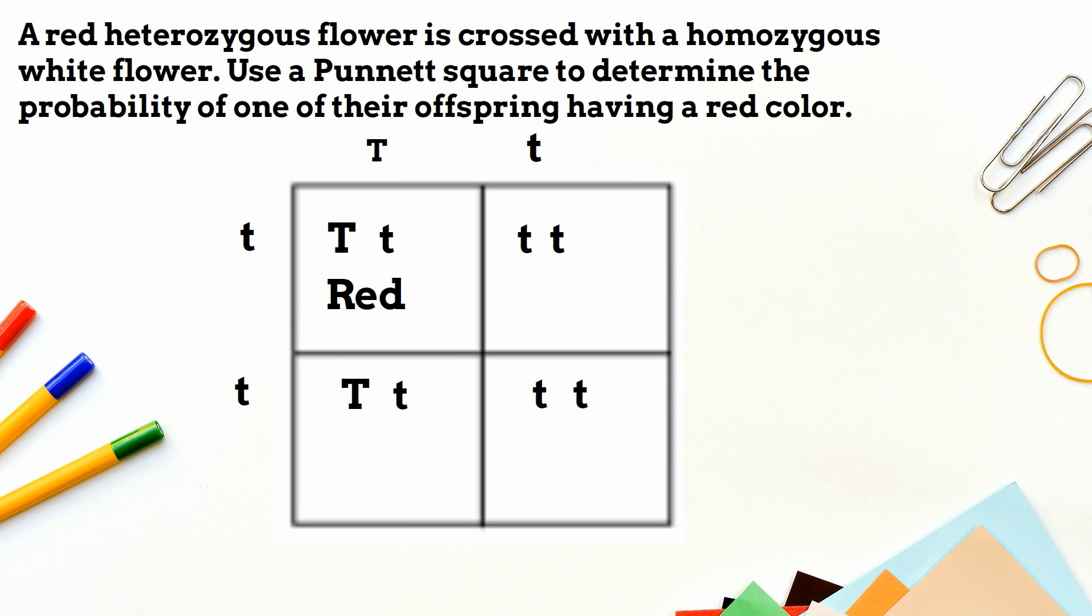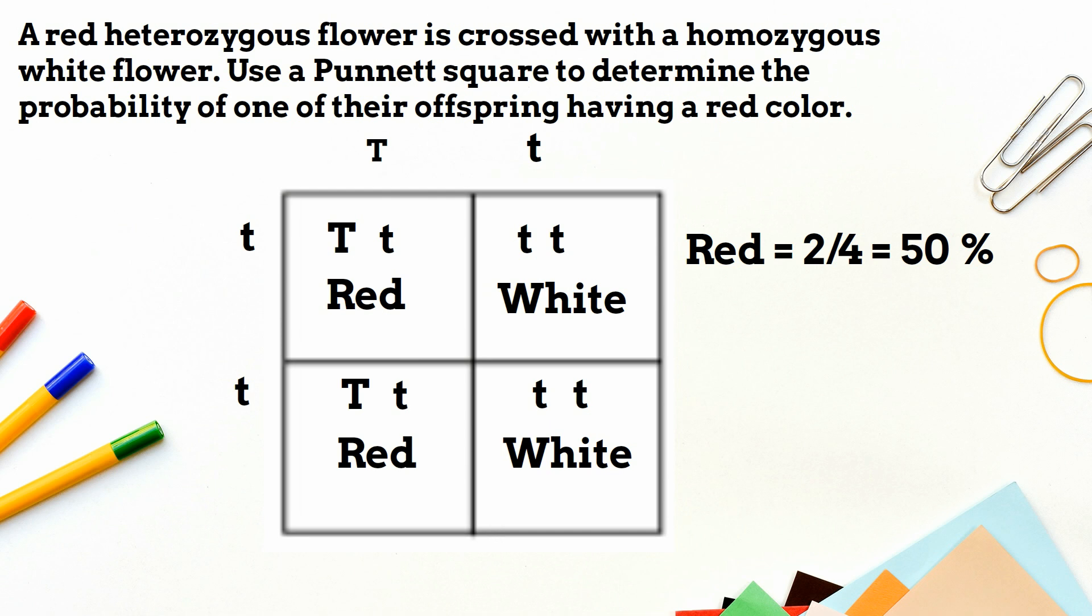So you have dominant, dominant, which is 2 out of 4 or 50 percent. The offspring will have red flowers. Recessive, recessive, which is 2 out of 4, which is 50 percent. The offspring will have white flowers.